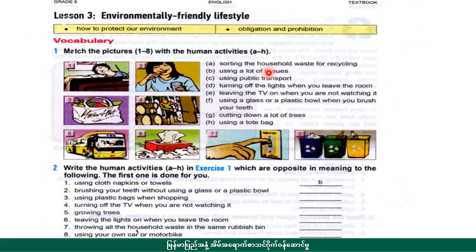Using a lot of tissue. Using public transport. We are going to take a look at the household waste. Item 1: Leaving the TV on when you are not watching it. Item 2: Using a glass or a plastic bowl when you brush your dish.